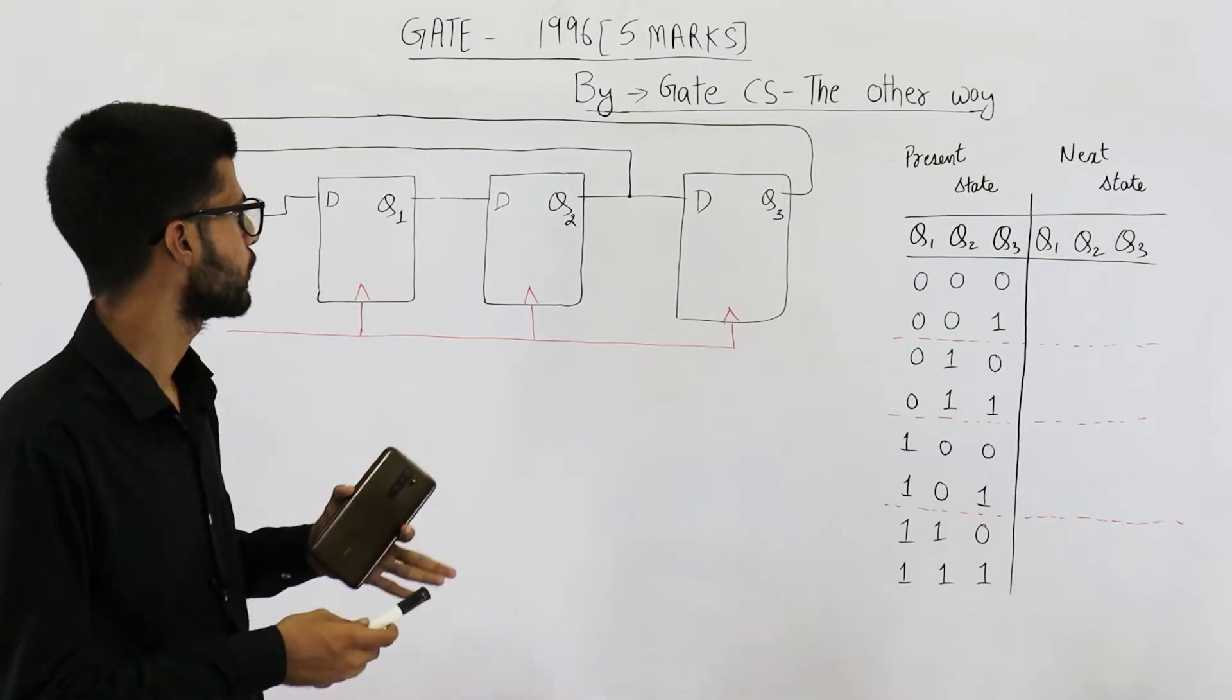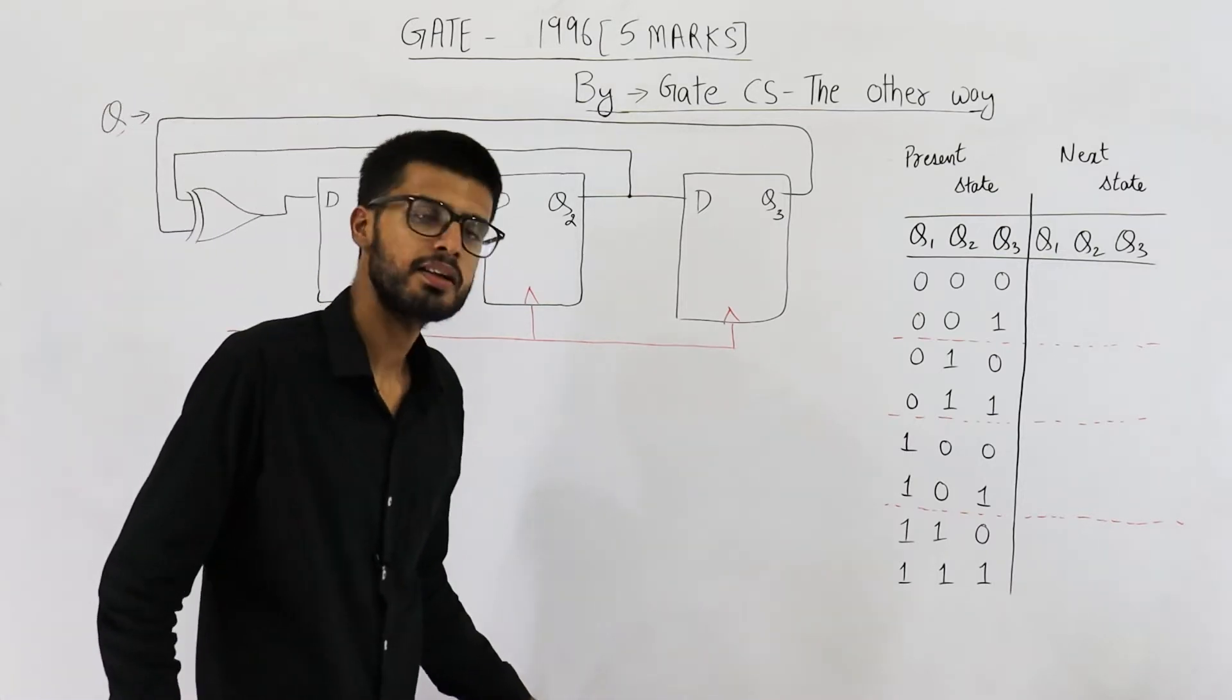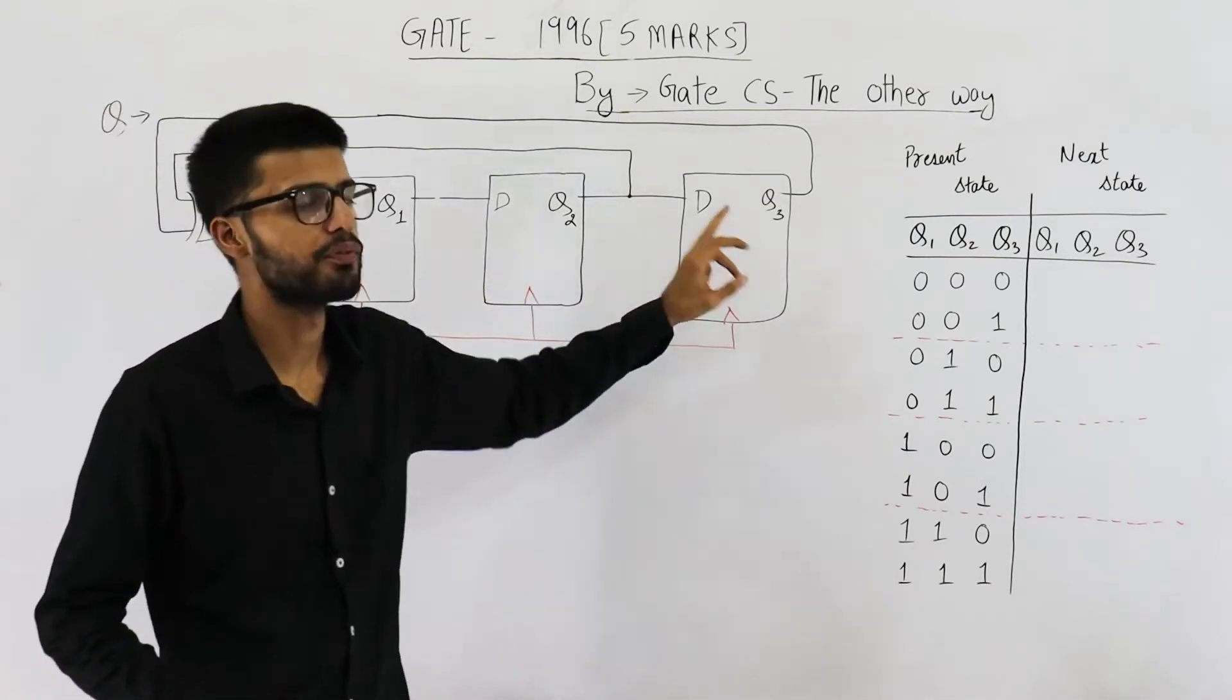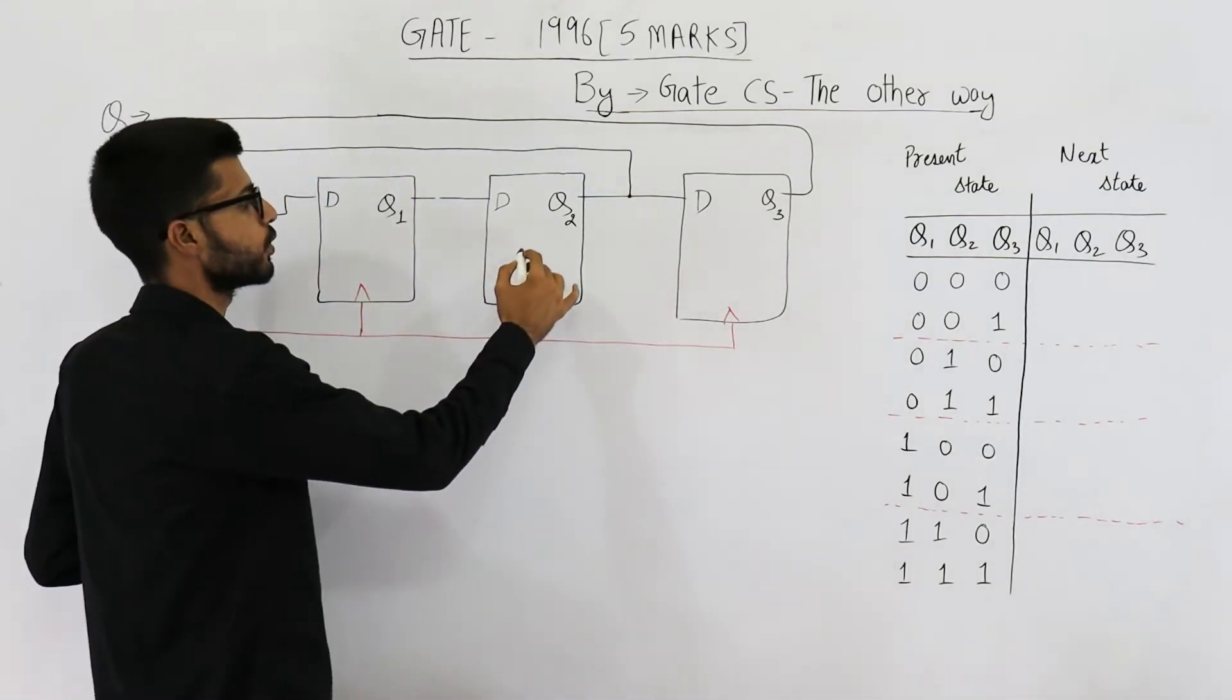You can see, I've drawn this counter on the board. It consists of three flip-flops and all three are D flip-flops. Let us analyze this one.